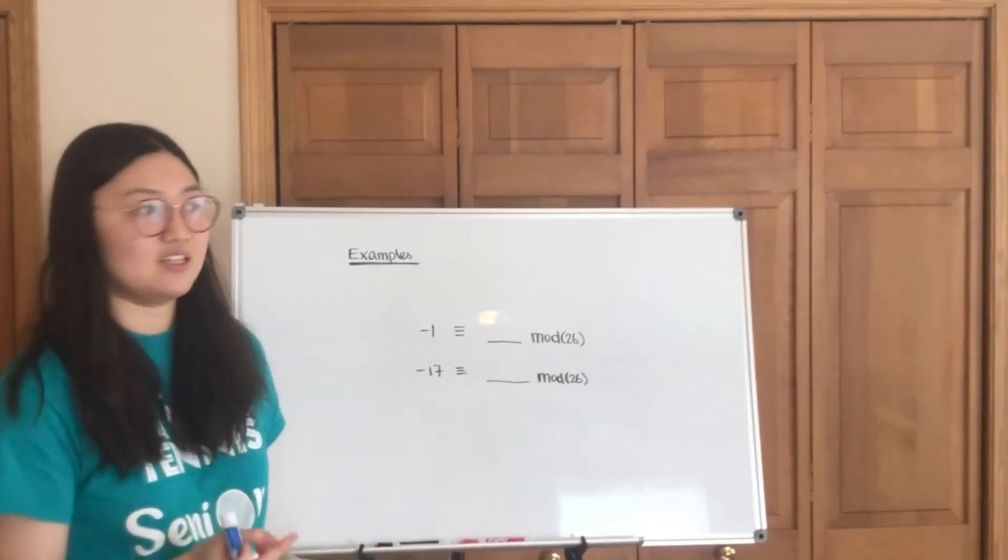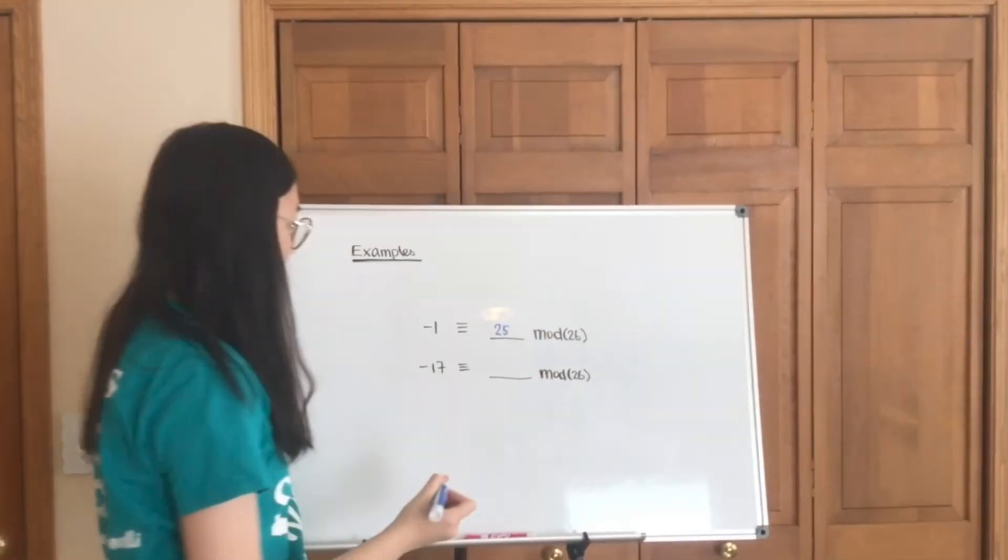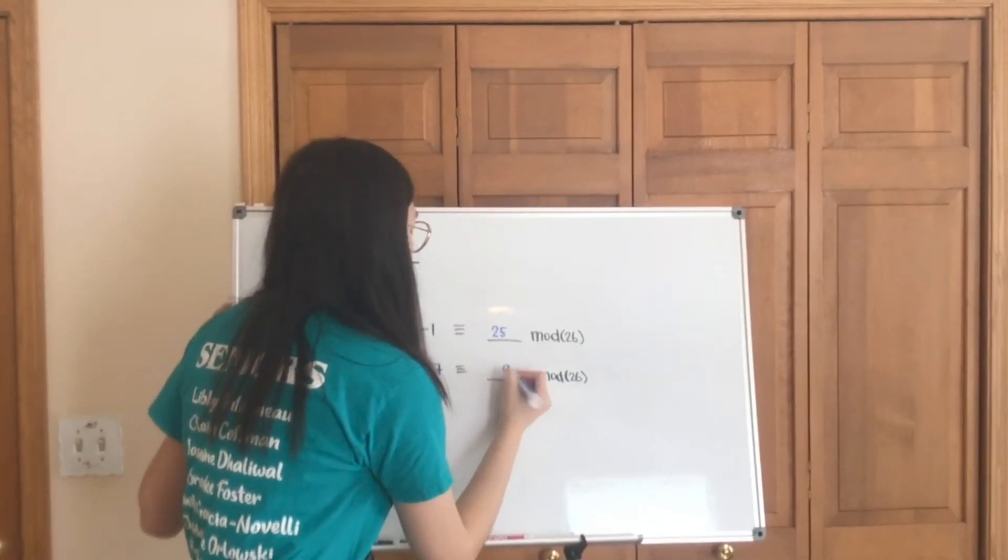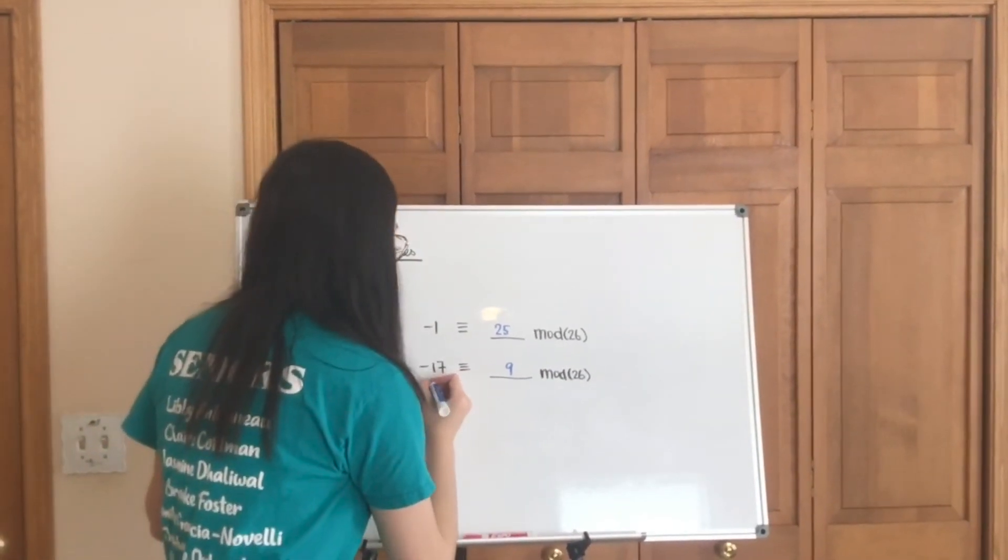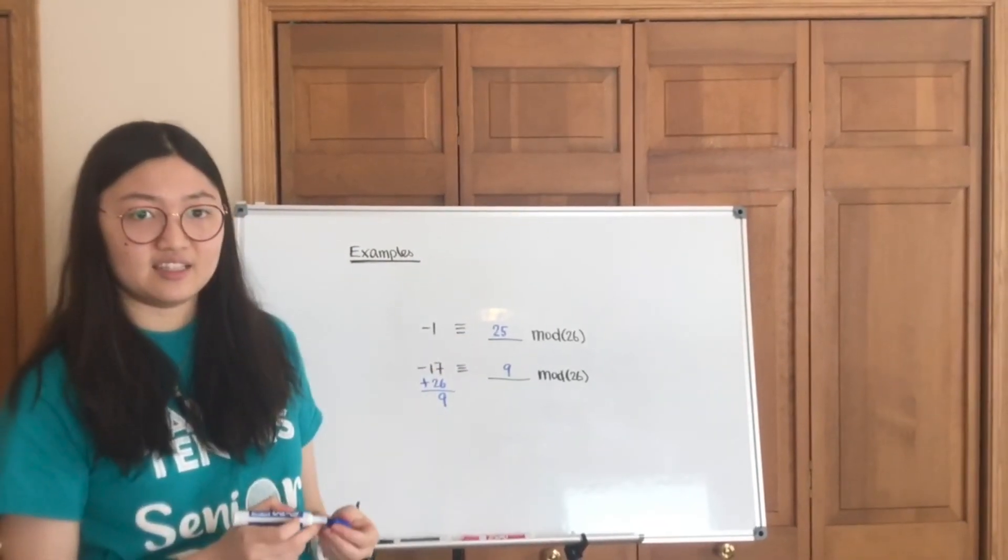And that's basically the same idea. Negative 1 is 25 in terms of mod 26. And similarly, negative 17 is 9 in mod 26. So basically, that's how you get to it.